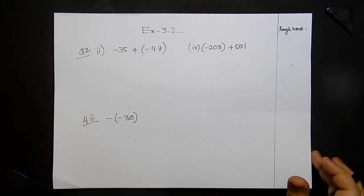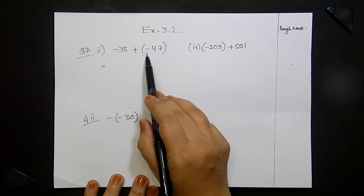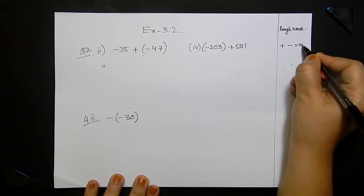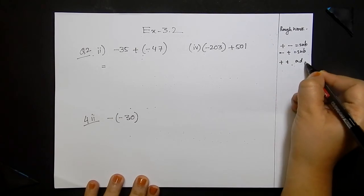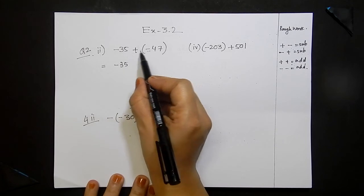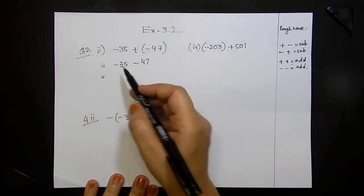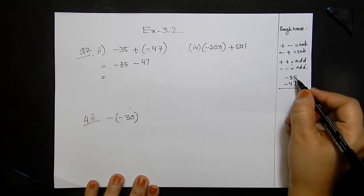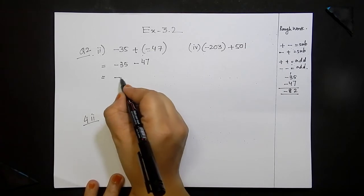Now question number 2 — do this without using a number line. When opening brackets: if signs are different (plus-minus or minus-plus) you subtract; if both signs are the same, it becomes addition. For minus 35 plus (minus 47): the signs inside are both minus, so same signs — we add. 35 plus 47: 5 plus 7 is 12, carry 1, giving 82. Both are minus so the answer is minus 82.